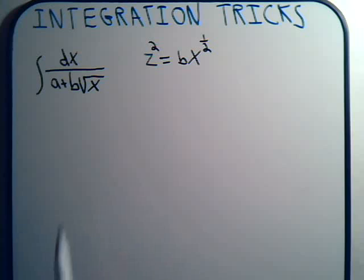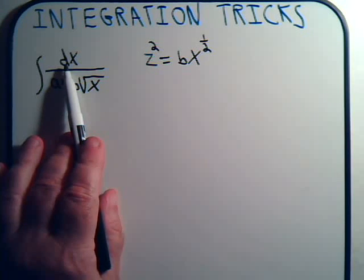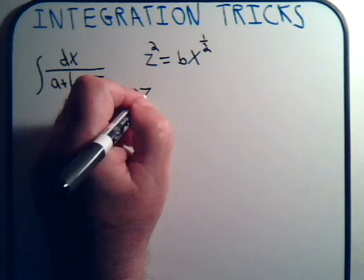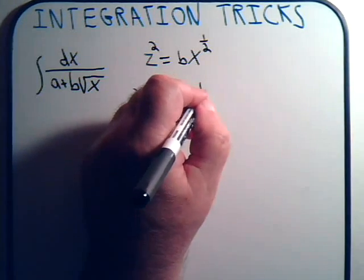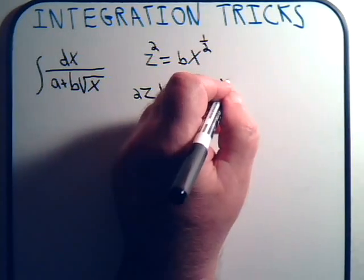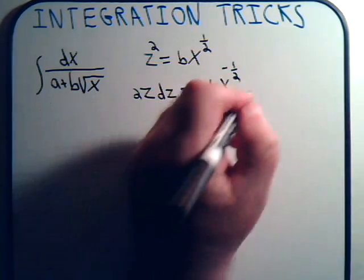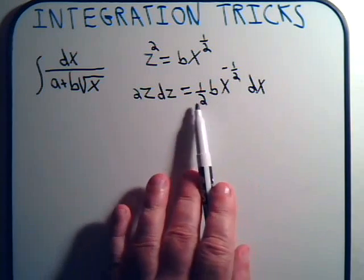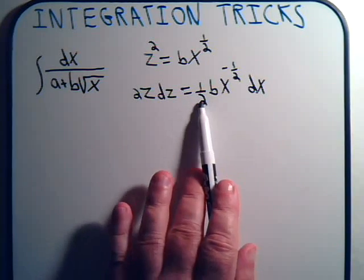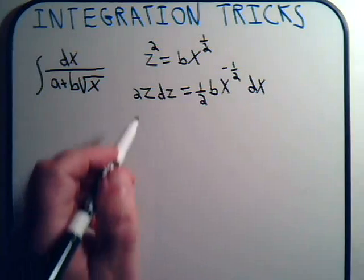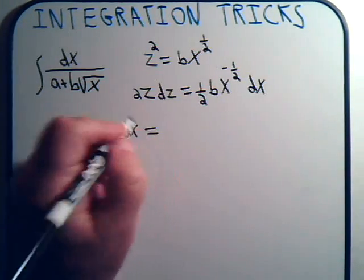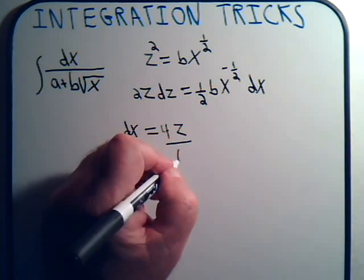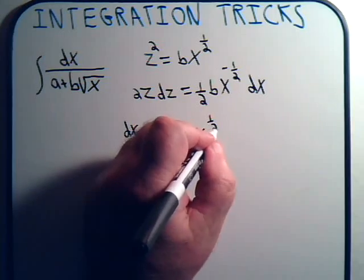Up in the numerator we have dx, and we have to get this expressed in terms of the z variable. So we differentiate: 2z dz equals one-half b x to the minus one-half dx. Multiplying both sides by 2, 1 over b, and x to the one-half, we get dx equals 4z divided by b times x to the one-half dz.